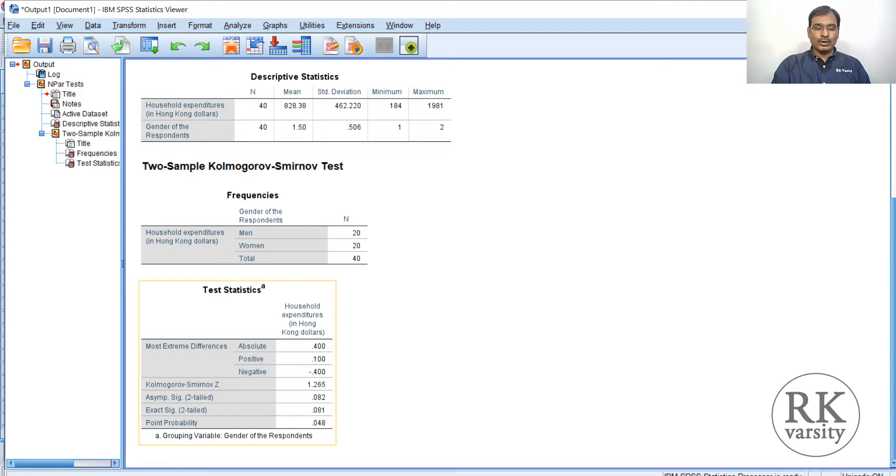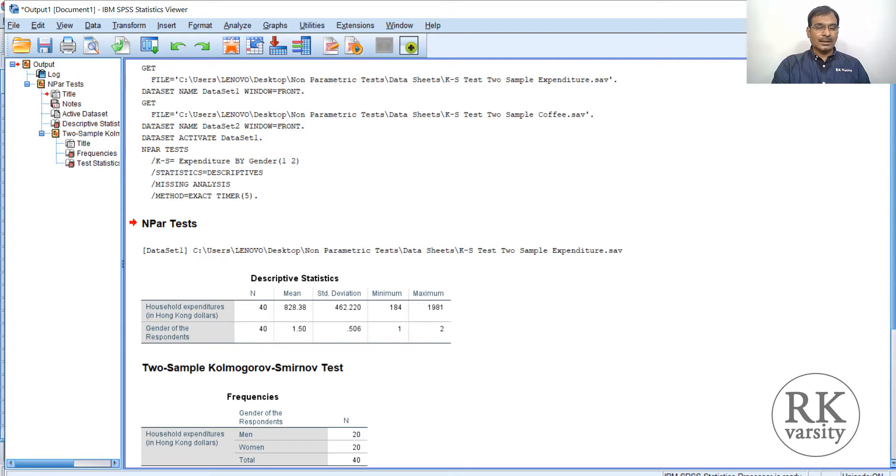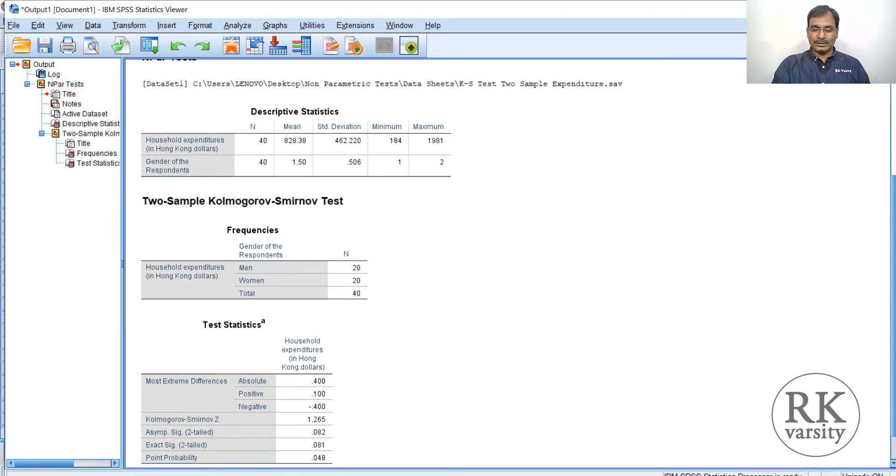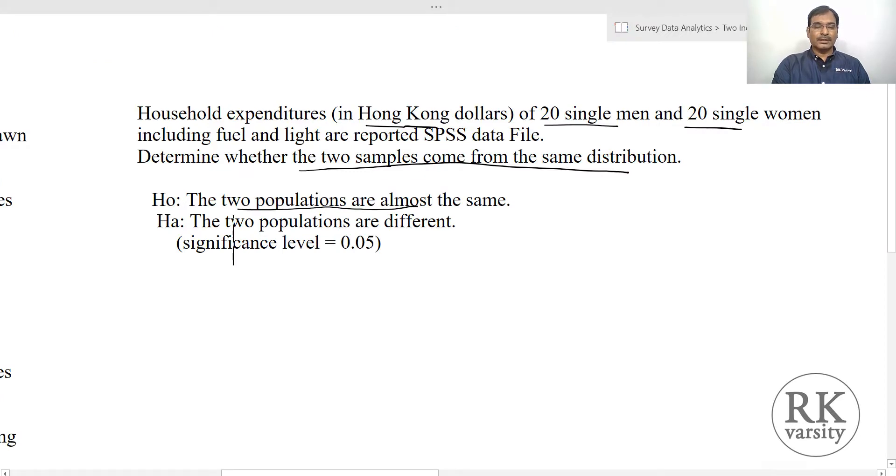This 0.08 indicates that we fail to reject the null hypothesis at 5% significance level. If your significance level is 10%, you would have rejected the null hypothesis. But since the significance level is 5%, which is greater than 0.05, we retain the null hypothesis. This is one way of calculating the Kolmogorov-Smirnov test. The result indicates that the two distributions are drawn from the same population. The two populations are almost the same.